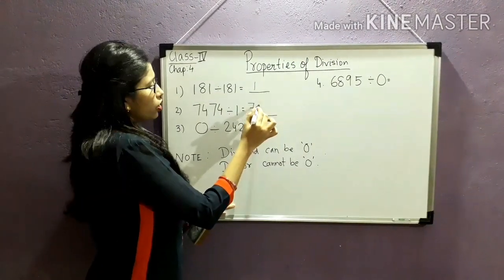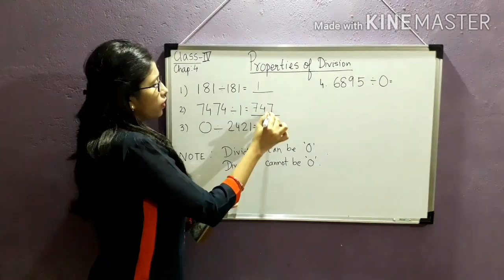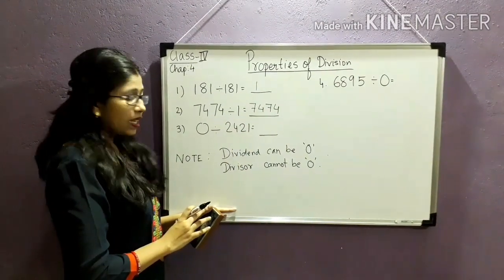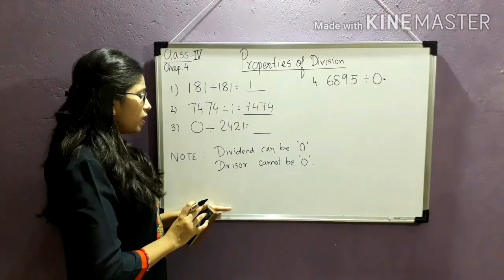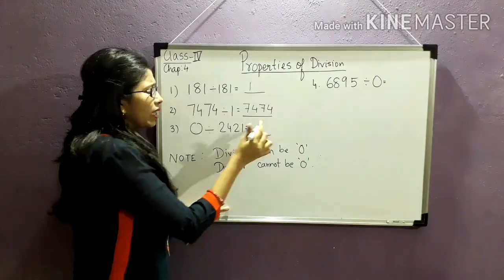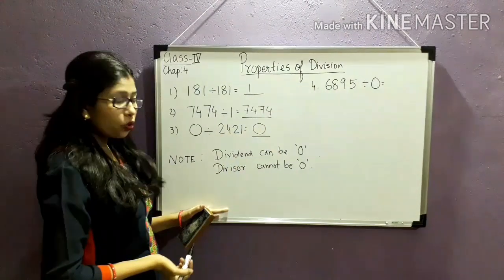Now the third property says that if I divide 0 by any number, I will get the quotient as 0.